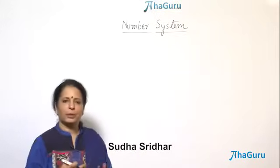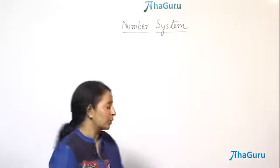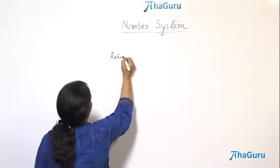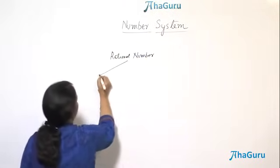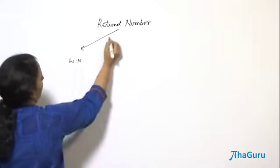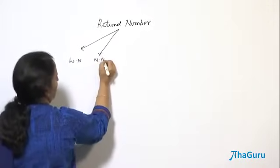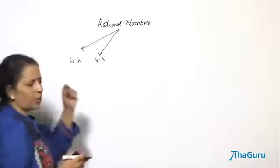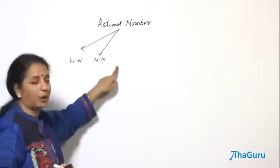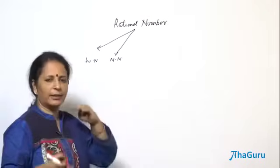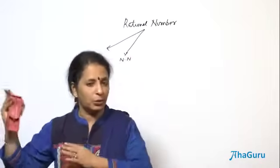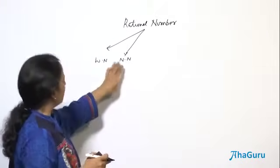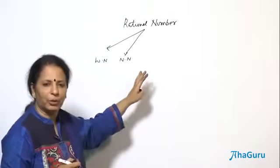Now we will put all these members of the family together and write the name of their head, which is known as rational numbers. This family has all these members. You had whole numbers, part of it also became natural numbers. What is the difference between whole number and natural number? Natural number is the counting number starting from 1, while whole number also has 0, so from 0 up to infinity.